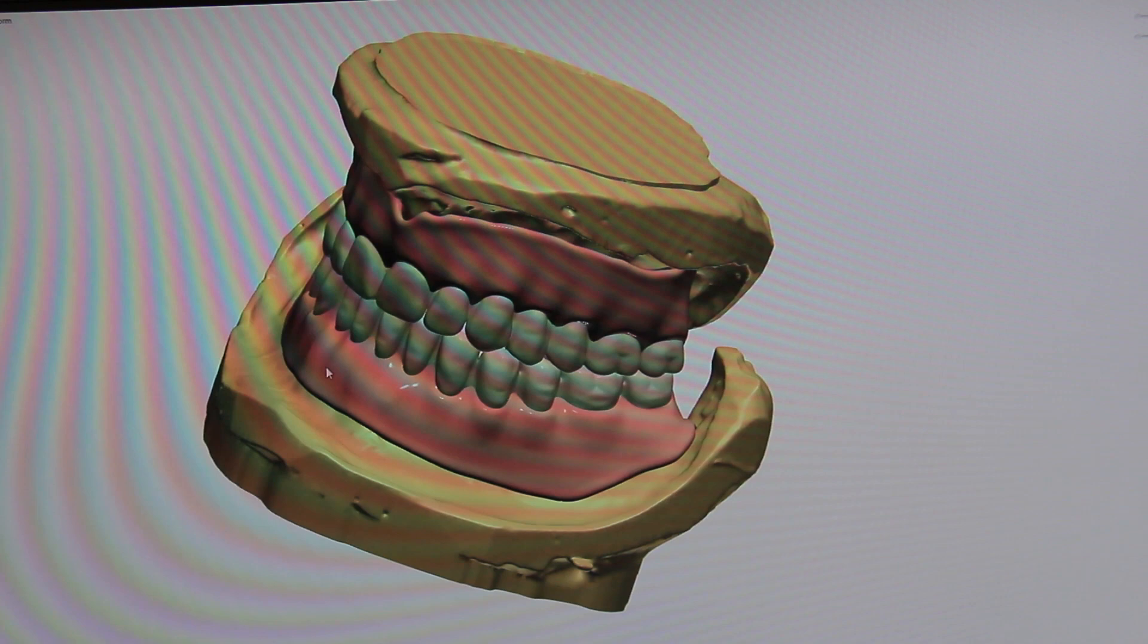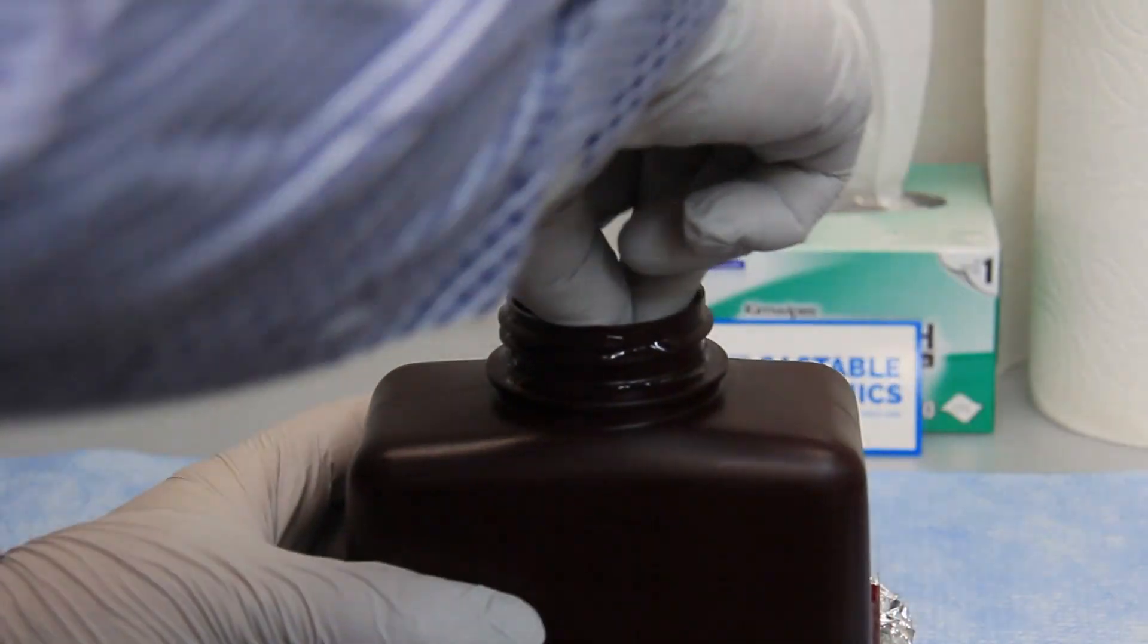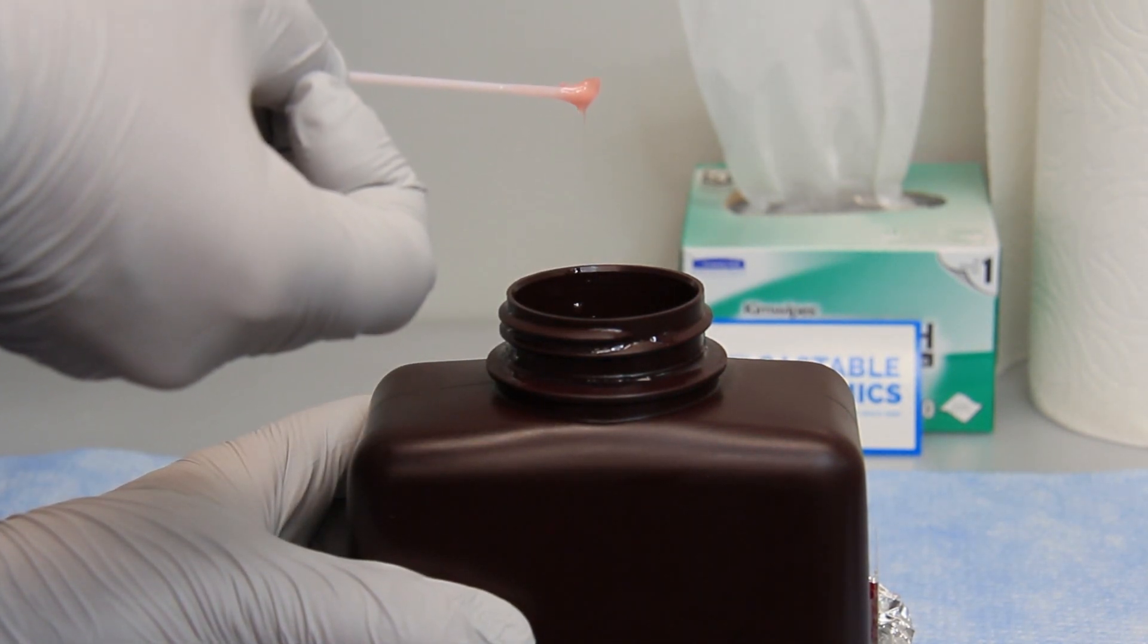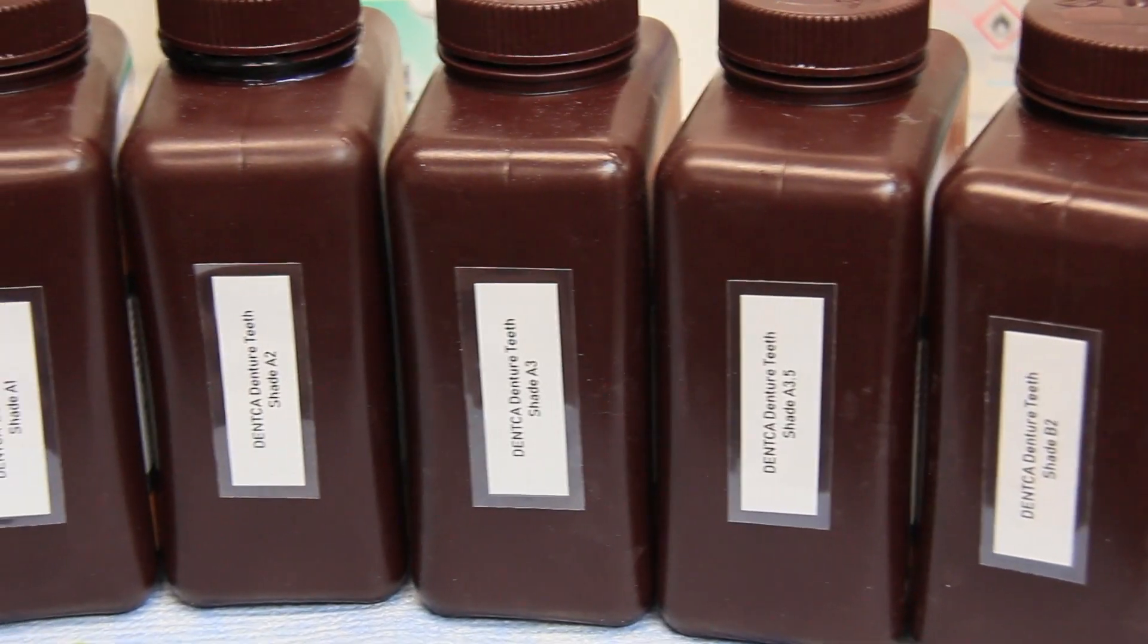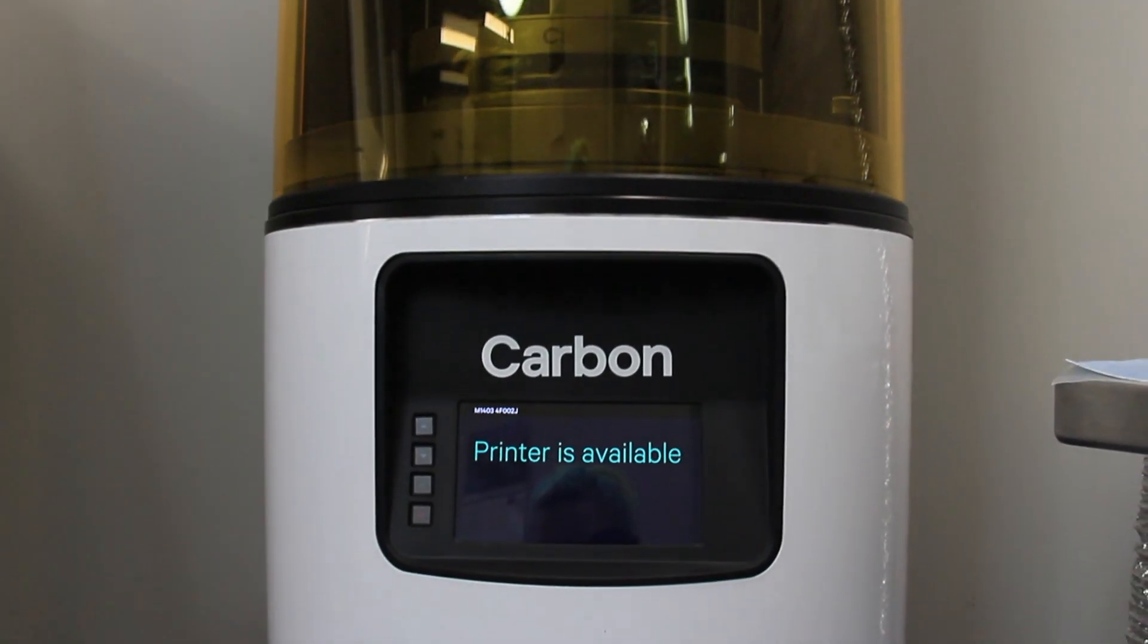Once the design is complete, the denture can then be fabricated. 3D printed dentures are made from a very specialized programmable acrylic resin. There are many different resins to choose from depending on the final color desired for the teeth and gums. Once the appropriate shade is selected, the printing can begin.